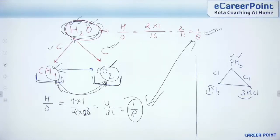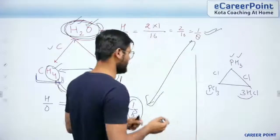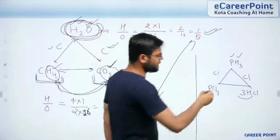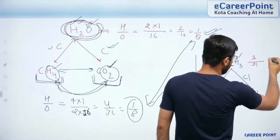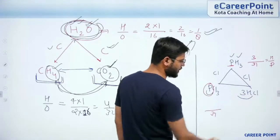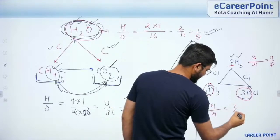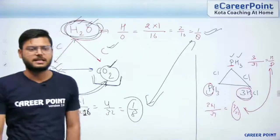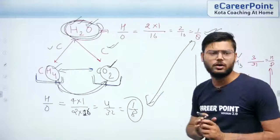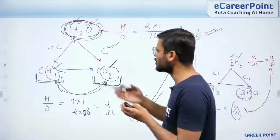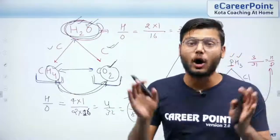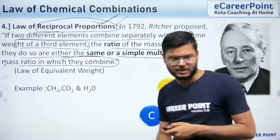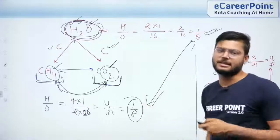For PS3: phosphorus is 31 and hydrogen is 3, so the ratio is 3/31. For PCl3 with HCl: phosphorus is 31 and 3 × 1 hydrogen gives 3, so ratio = 3/31 — it is the same! There are many examples, but you must understand the law. In the NEET entrance exam, they can ask which combination follows the reciprocal proportion, and you need to check these ratios.